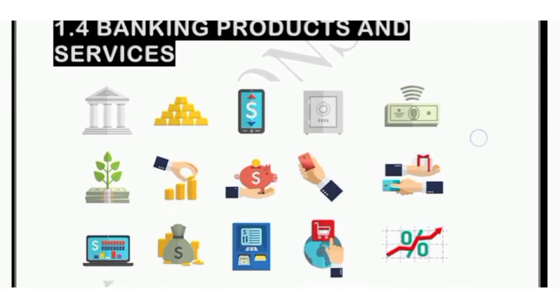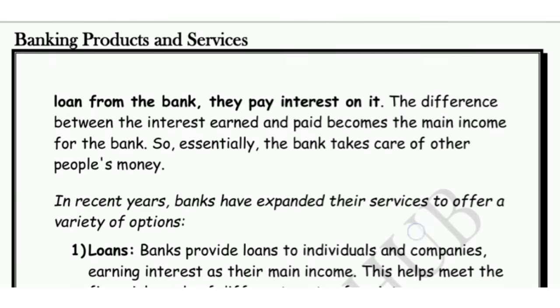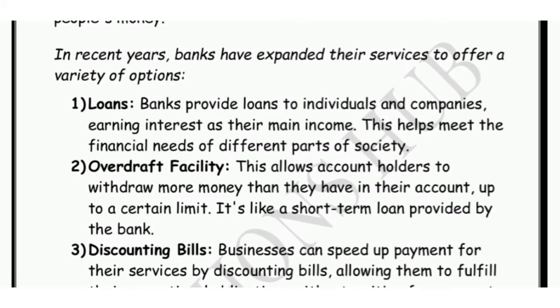Ab next topic hai banking products and services. Kabhi aapne socha hai ki bank ki jo major income aati hai woh kahan se aati hai? Bank jo hai woh deposit leti hai customer se aur usmein let's suppose 2% ka interest deti hai. Phir usi paison se loan baanti hai aur 10% ka interest leti hai. Toh yeh jo gap hai 2% aur 10% ke beech, yahi unka major source of income hota hai.